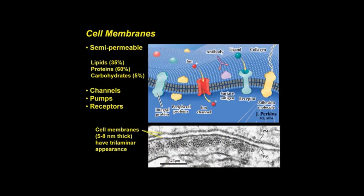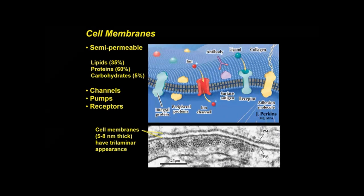Membranes are semipermeable barriers that regulate movement of ions, water, and macromolecules. They house lipids, proteins, and carbohydrates. A current rendition of the cell membrane shows a phospholipid bilayer in blue with associated integral and extrinsic proteins. These proteins function as channels, pumps, receptors, or for cell adhesion. By high power EM, the cell membranes of two adjacent cells have a trilaminar appearance and are 5 to 8 nm thick.